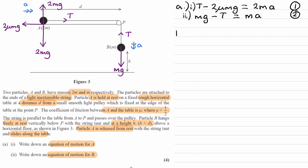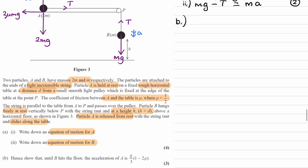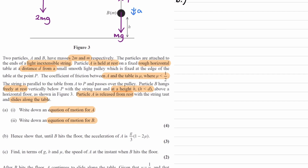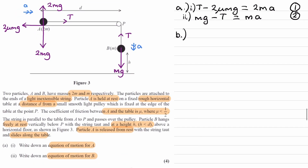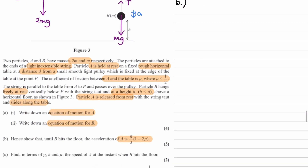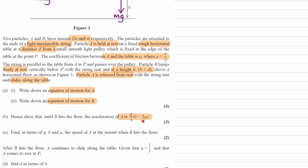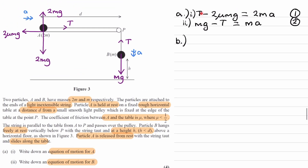For part B, we want to show that until B hits the floor, the acceleration of A equals the given expression. Since this is an inextensible string, so long as there is tension, the acceleration of B and A are the same. Looking at the target expression, it contains μ and g but no tension, so we want to eliminate T from our equations.